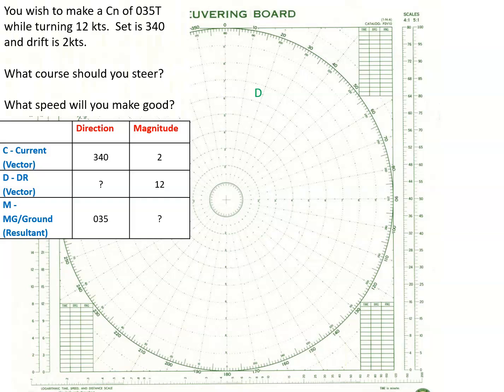It's the made good line. You wish to make, it's make good. While turning 12 knots - that's DR, you're turning, that's your RPMs. Set is 340 and drift is 2 knots. That's definitely the current. So this is what you have: Current is 340, magnitude is 2 knots. We don't know what direction the DR line is, but we do know that the length of it is 12. We do know that we want to make 035, but we don't know what the speed made good is. These are the two things we're going to be looking for.